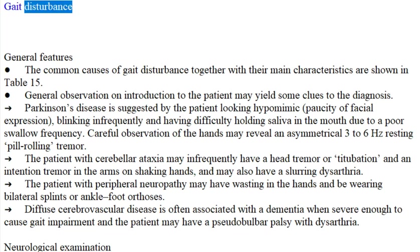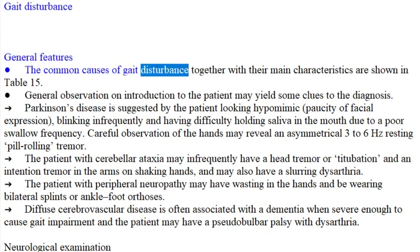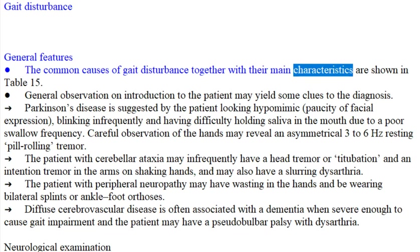Gait Disturbance. The common causes of gait disturbance together with their main characteristics are shown in Table 15.